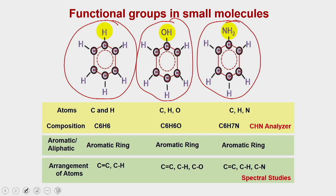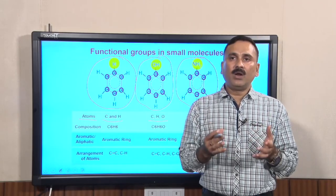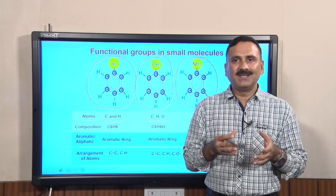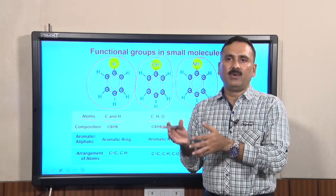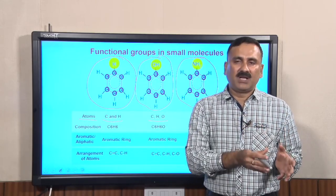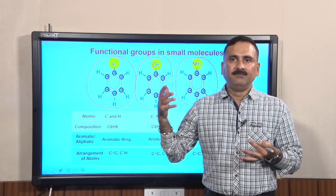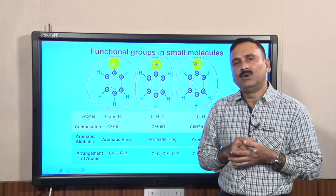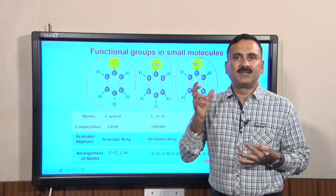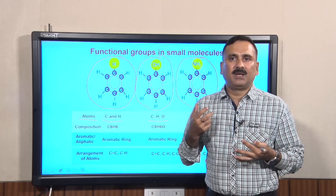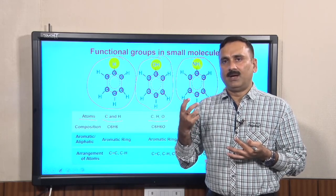From the known structures of these three compounds, in terms of atoms: benzene contains only carbon and hydrogen, whereas phenol contains carbon, hydrogen, and oxygen, and aniline contains carbon, hydrogen, and nitrogen. The first thing you have to do when you synthesize or purify a new product from overexpressed cells — especially small molecules such as reaction metabolites or secondary metabolites — is to do a composition analysis of the constituent atoms present in that particular product.